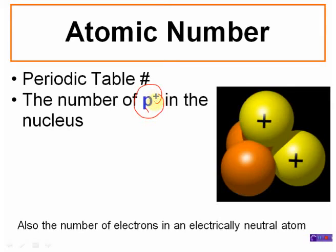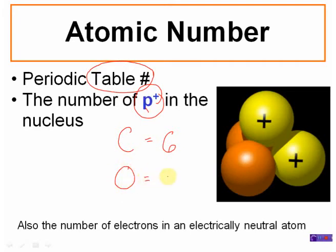Every element is unique in the fact that every element has a different number of protons, and that's how you identify what an atom or an element is — you look at the number of protons they have. The number of protons also corresponds to the number they are on the periodic table. So carbon is number six, oxygen is number eight, meaning carbon has six protons and oxygen has eight protons. The atomic number is the number of protons in the nucleus of the atom.